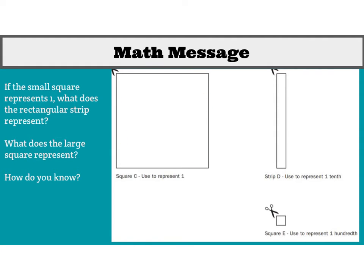I have a square, a strip right here, and a little square down here at the bottom. The small square represents one. What does the rectangular strip represent? Hopefully you figured out that the rectangular strip represents 10. So if we know that, what does the large square represent?